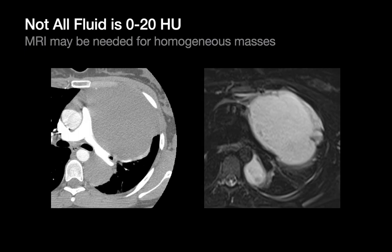One reminder: not all fluid is going to be 0 to 20 Hounsfield units like simple fluid. You're going to encounter proteinaceous fluid sometimes, where a big cyst is isoattenuating to muscle on CT. When you're dealing with an anterior mediastinal mass that's homogeneously higher in attenuation than simple fluid, you may need an MRI before ruling in or ruling out fluid.